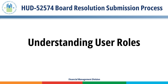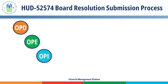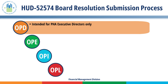Understanding User Roles: The Public Housing Portal designates four types of user roles — OPD, OPE, OPI, and OPL. The OPD user role is intended for PHA Executive Directors only. This user can create, edit, and submit the form HUD-52574.